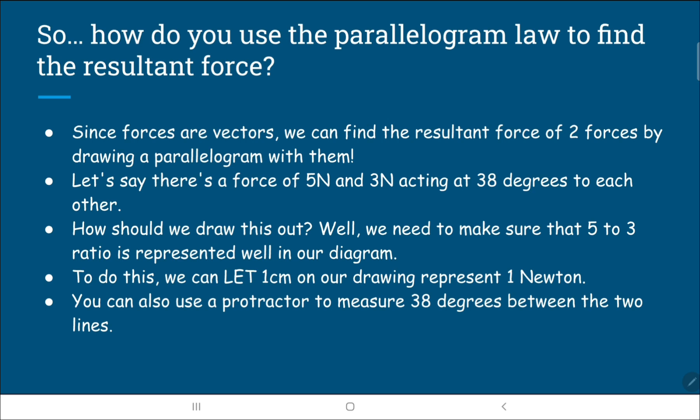So right now we have a situation where there's a five newton force and there's another guy who's pushing three newtons and these two forces are 38 degrees apart. How should we draw this out? Well, we need to make sure that the five to three ratio is represented well when we draw out our parallelogram in our diagram. So one thing that we use to do this is we let one cm on our drawing represent one newton. We draw a key or some sort of scale to make sure that the five to three stays in proportion and this ratio is represented. You also need a protractor so you can just manually measure the 38 degrees between the two lines.